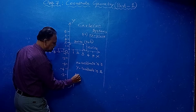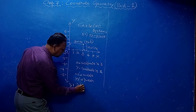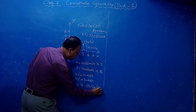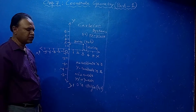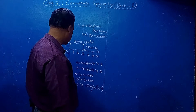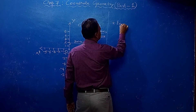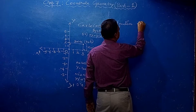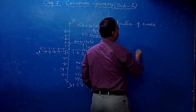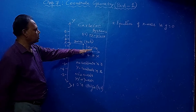In coordinate geometry, we represent a point in ordered pair notation - x comma y. The x-axis is labeled X and X-dash, and the y-axis is labeled Y and Y-dash. The point O is called the origin, that is 0 comma 0. A very important basic concept: the equation of the x-axis is always y equal to 0.